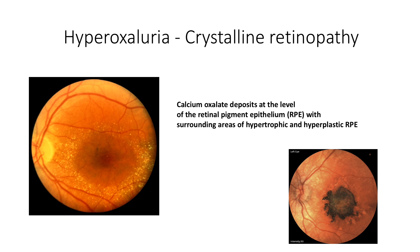Hyperoxaluria is a crystalline retinopathy in which you find crystalline deposits around the macula. Eventually it can result in a lot of pigmentation and hyperplastic RPE.